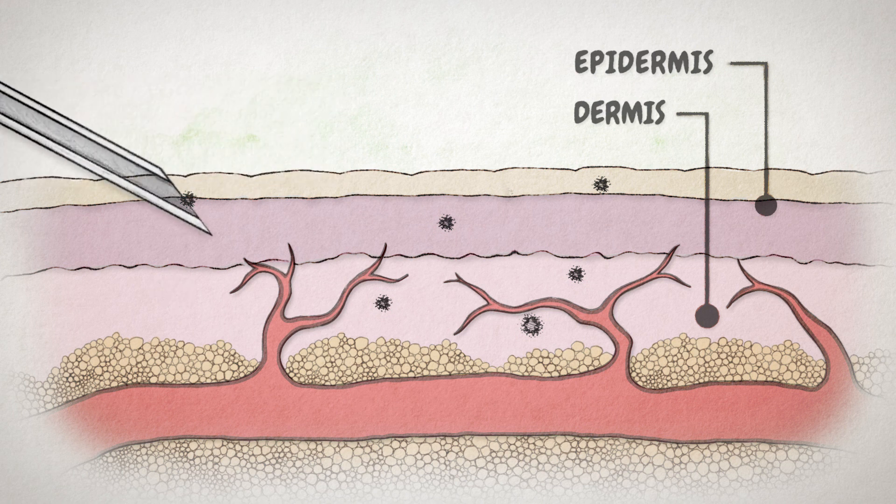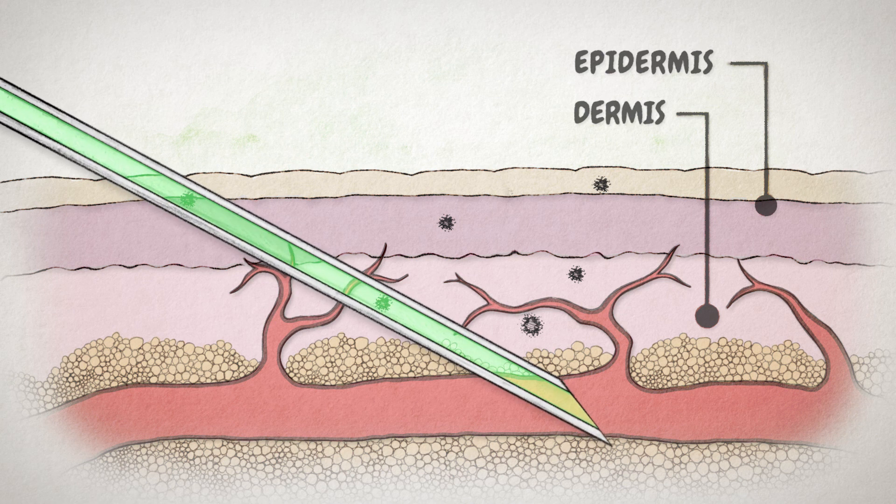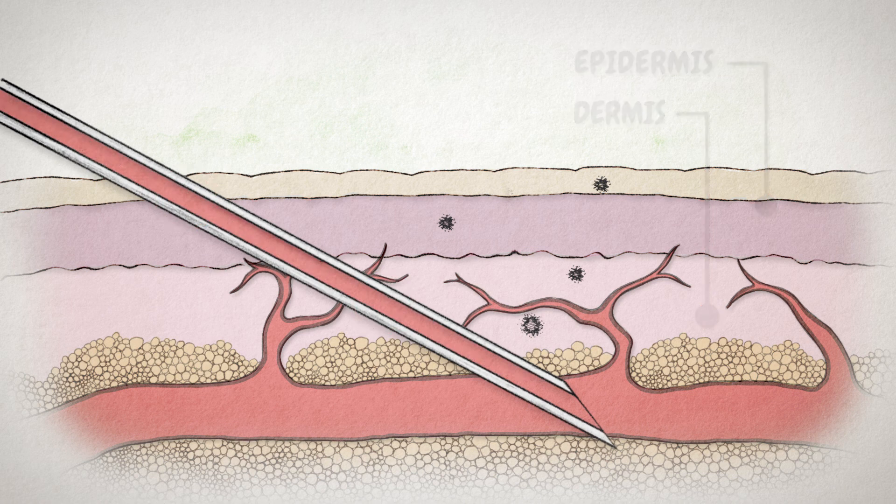During venipuncture, the needle traps a minute core of dermis, and if microbes are present, they are given a straight line into the culture bottle.